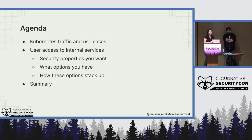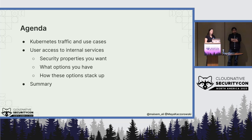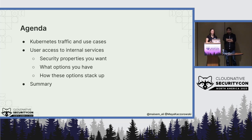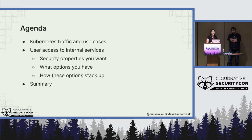We'll cover first what kinds of traffic you might need to protect in Kubernetes and why you might have that kind of traffic going to your cluster. Then we'll specifically look at users accessing internal services in your clusters — that's the focus of this talk. We'll look at the security properties you likely want for protecting access to these internal services, go over the various options that exist in and out of Kubernetes for protecting this traffic, and compare those. This talk is geared for network administrators or security teams using Kubernetes with some understanding of how Kubernetes works.